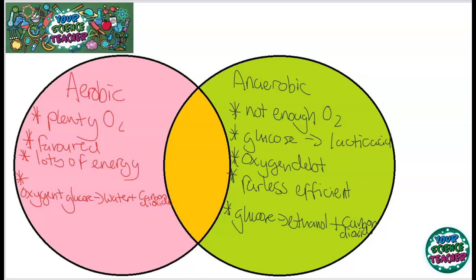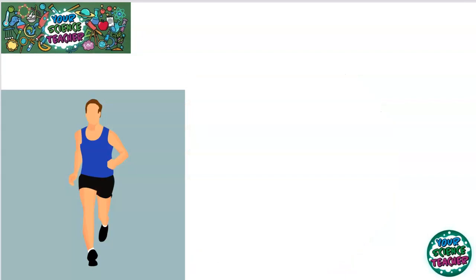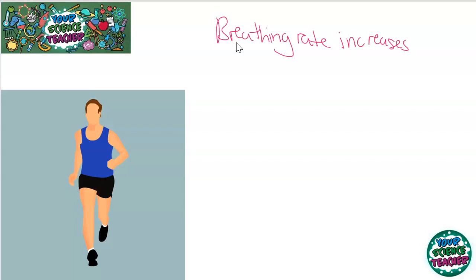It's important to remember that both these processes create energy and they both require glucose as a reactant. As well as respiring anaerobically, your body responds to doing exercise — often your breathing rate will increase. Now breathing and respiration are different: breathing is the taking in of air and the giving out of carbon dioxide, whereas respiration is the conversion of glucose into carbon dioxide and water with the releasing of energy. Your breathing rate increases in order to make sure you have enough oxygen so you can respire more.